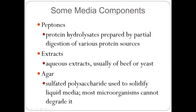Let's talk a little about these components. Peptone is a protein resource — partially digested and hydrolyzed protein that becomes peptone. Extracts usually come from beef or yeast, which is an aqueous extract. Agar comes from sulfated polysaccharide. Bacteria growing there cannot degrade it — cannot eat it. Agar is tricky: it solidifies at about 25 to 30 degrees Celsius and melts at more than 45 to 50 degrees Celsius.